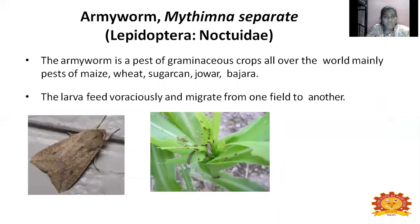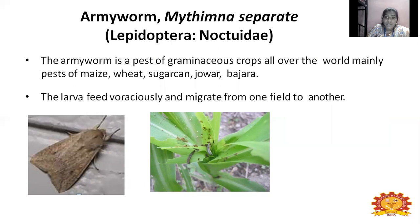Next: armyworm, Mythimna separata, Lepidoptera. It is a pest of graminaceous species — present widely in maize, wheat, sugarcane, jowar, and bajra. The larvae feed voraciously and migrate from one field to another. These two characteristics — voracious feeding and field migration — are the main problems with this pest.